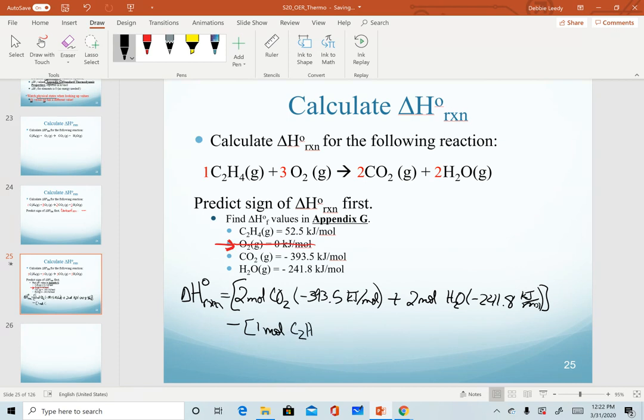For our reactants, we have one mole of C2H4 times its value of 52.5. Notice this is one of the exceptions to the prediction. We said that most enthalpy of formations would be negative. This one happens to be positive. And then I don't need to include it, but I'm just reminding myself I've accounted for it, my zero value for oxygen.